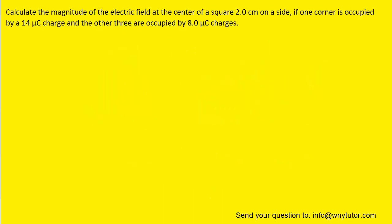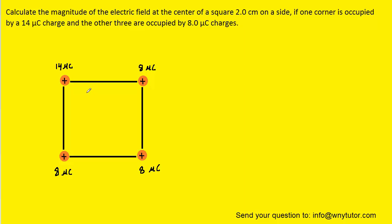If you haven't done so yet, please pause the video and try to answer the question on your own before listening on. Our first step is to draw a picture of this square with the four charges placed at its corners. At one corner is the 14 microcoulomb charge, and at the other three corners we have charges each of 8 microcoulombs. For convenience, we can label each charge with an arbitrary number: q1, q2, q3, and q4. The question wants us to determine the magnitude of the electric field at the center of this square, so we put a little dot in the center for reference.